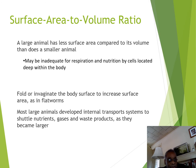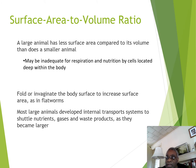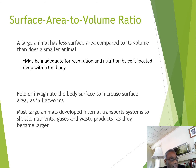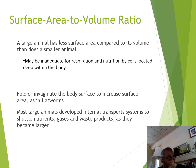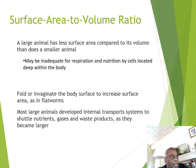A large animal has less surface area compared to its volume, meaning that its surface area alone will be inadequate to allow for respiration just through the skin. Small animals can take in oxygen directly from the environment across their skin membrane. For larger animals, that's much more impractical because there's just not enough surface area to bring enough oxygen and nutrients into the interior of their body.